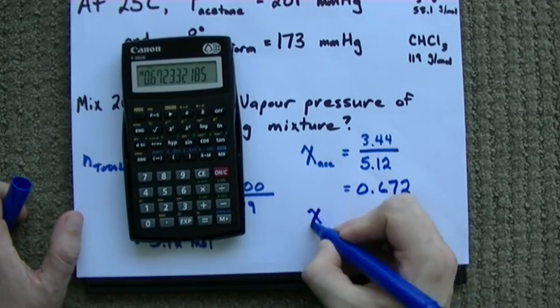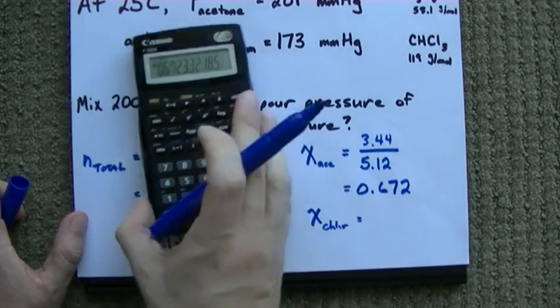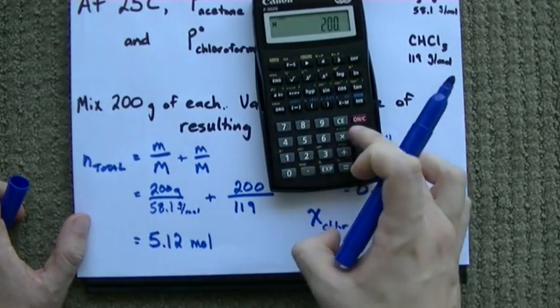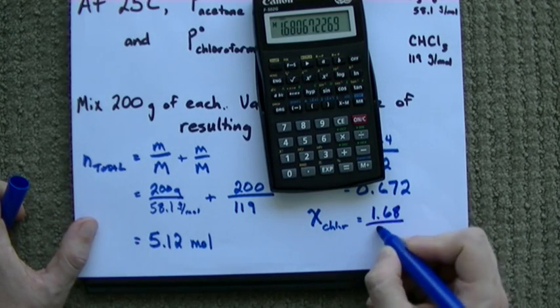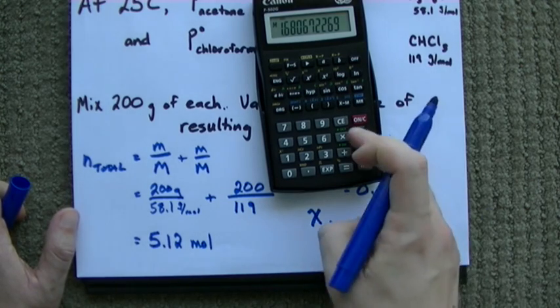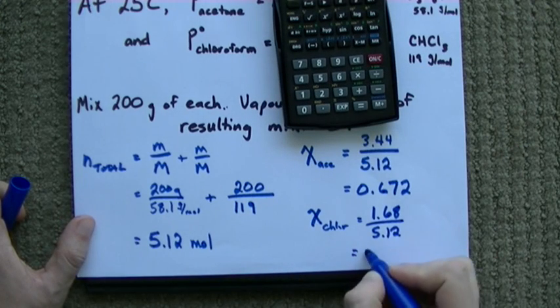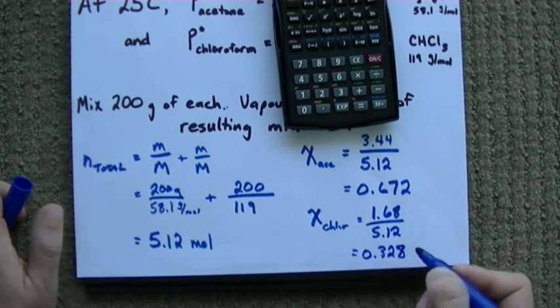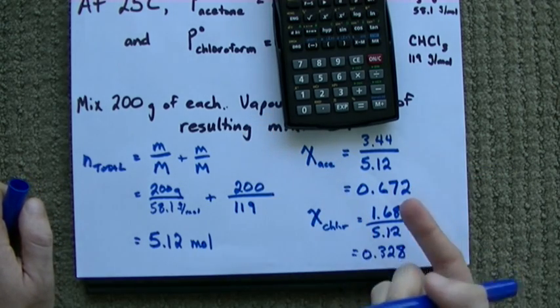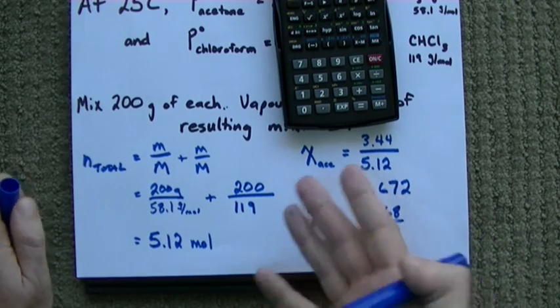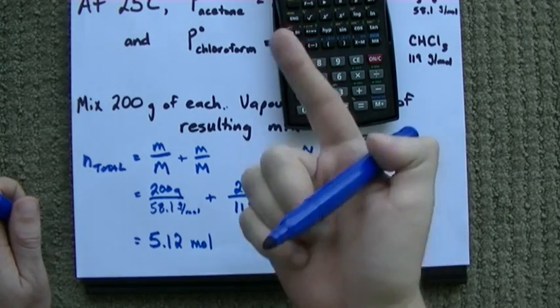Now, the mole fraction of chloroform is going to be the same thing. It's going to be the number of moles of chloroform that we have. That's 200 divided by 119. That's 1.68. Out of the total number of moles that we have, that's 5.12. And we're going to get 0.328. Pro tip, all your mole fractions together should add to 1, because these are the fraction of moles that each one accounts for. It's supposed to add to 100%, so it all adds to 1.